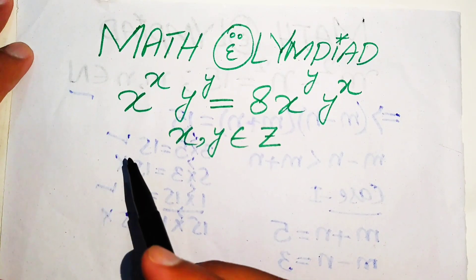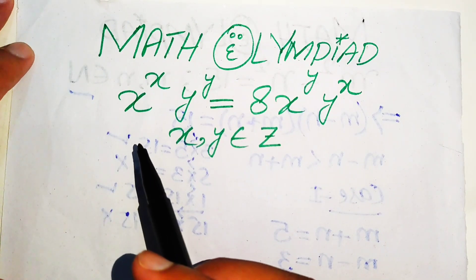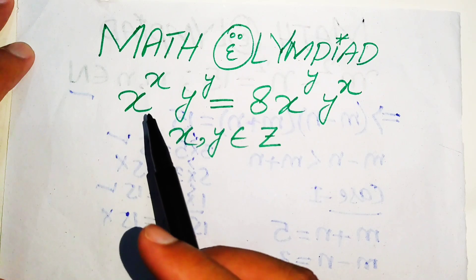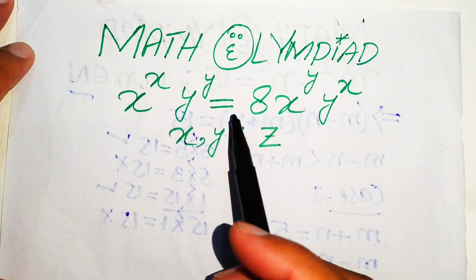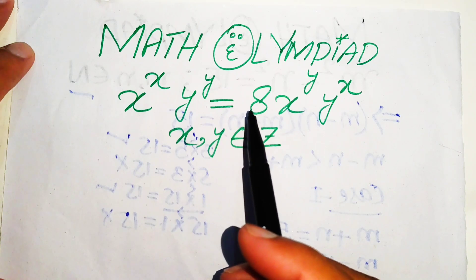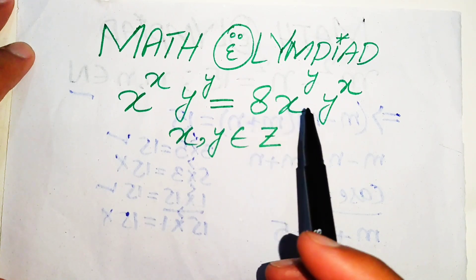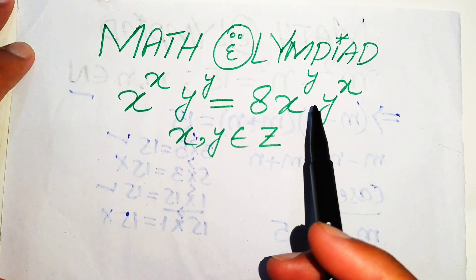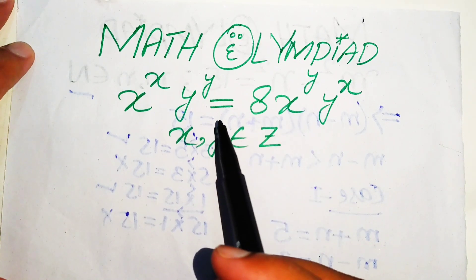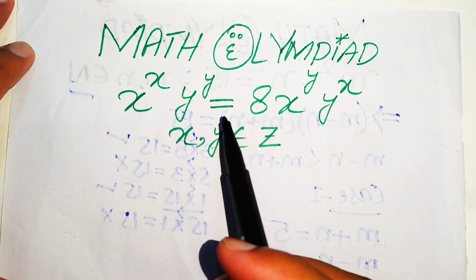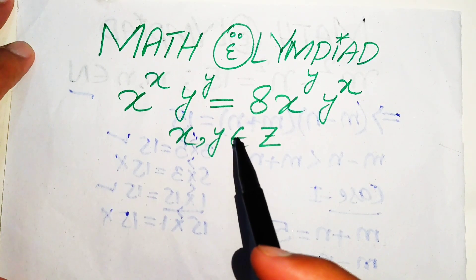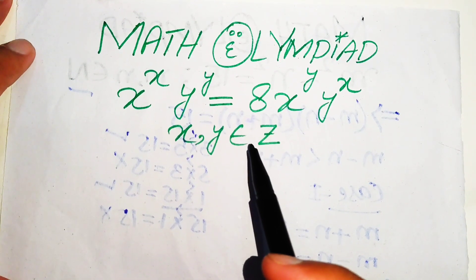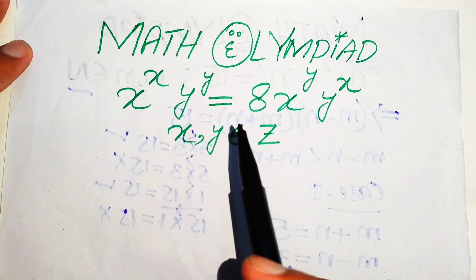Hello everyone, welcome. We solve this algebra problem: x to the power of x times y to the power of y equals 8 times x to the power of y times y to the power of x. We solve this for the values of x and y, where x and y belong to the integers.